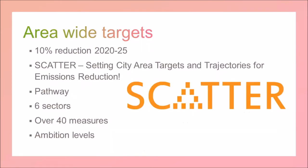Section C covers the area-wide targets. They're proposing a target of a 10% reduction per year from 2020 to 2025. The council wanted to illustrate what that meant, and there is a tool called SCATTER — Setting City Area Targets and Trajectories for Emissions Reduction.